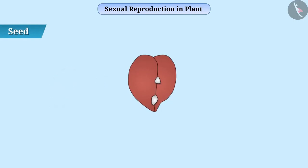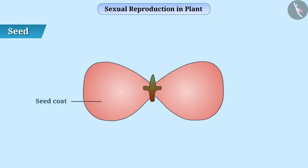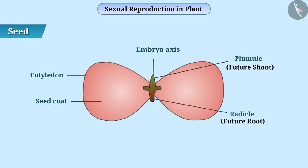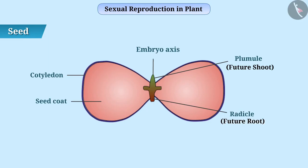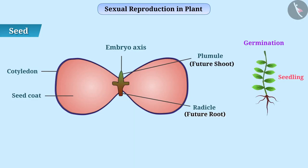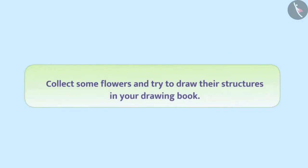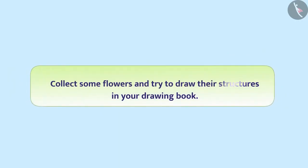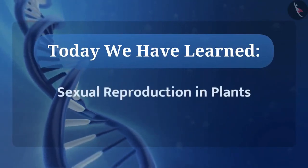The seed protects the embryo. A seed usually consists of a seed coat, cotyledon, and an embryo axis. The plumule of the embryonic axis is the future shoot and the radicle is the future root. Cotyledons are inflated structures in which food for the embryo is preserved. In favorable conditions, the embryo develops into seedlings — a process we call germination. The seedling then develops and transforms into a new plant. So now you must have understood sexual reproduction in plants very well. For your homework, collect some flowers and try to draw their structures in your drawing book.